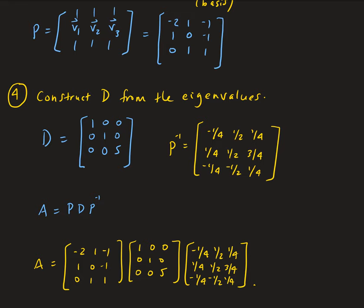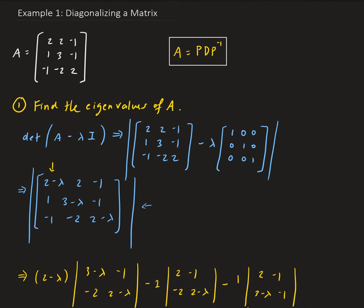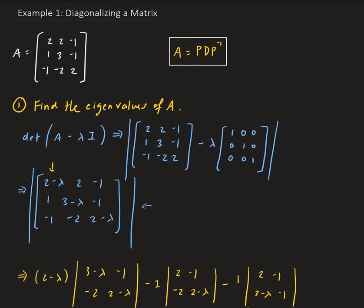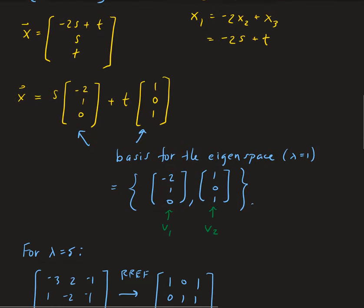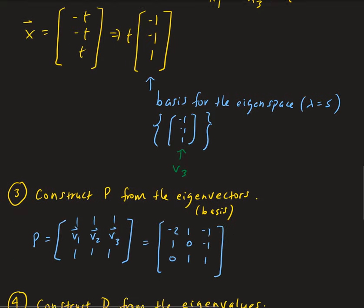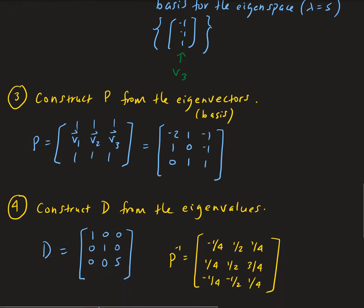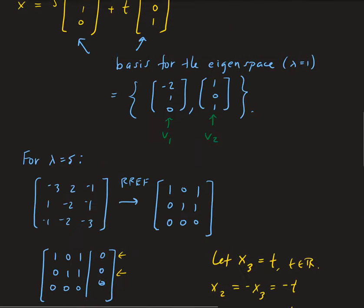To recap the process of diagonalizing a matrix: first, find the eigenvalues — they form the diagonal matrix D. Then find the corresponding eigenvectors — they form the columns of P. The order matters: there must be a correspondence between the eigenvectors in P and the eigenvalues in D. If you switch columns in P, you must switch the corresponding entries in D.